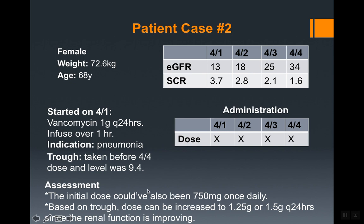Since the trough was low and the patient's renal function is improving, you could increase the dose to 1.25 or 1.5 grams every 24 hours. However, as a pharmacist you want to be conservative — I would go with 1.25 grams once daily and monitor the renal function. If renal function worsens again, decrease back to 1 gram. If it keeps improving, leave it at 1.25 grams, or increase further if the creatinine drops well below 1.